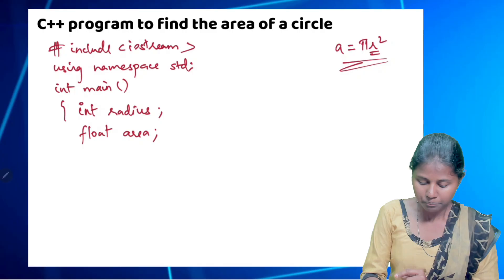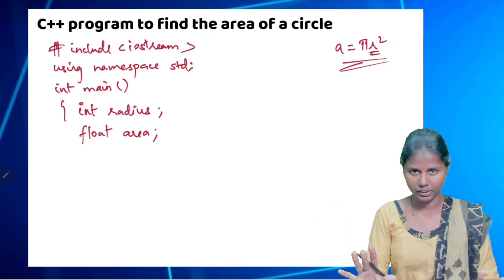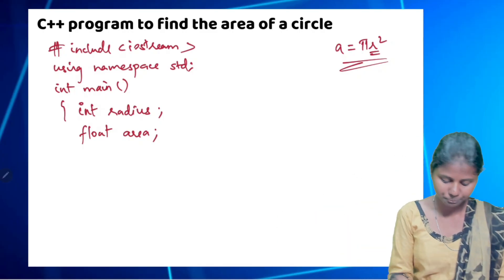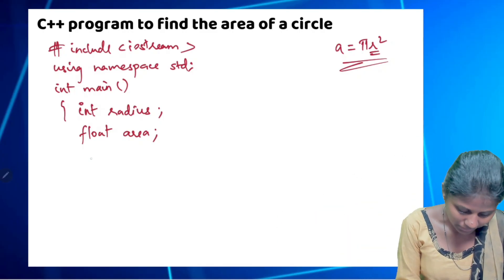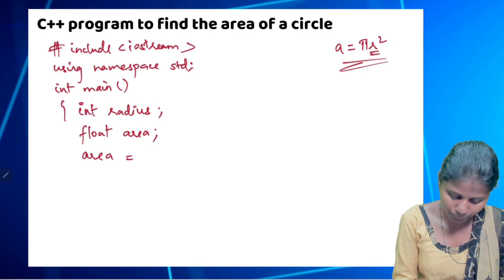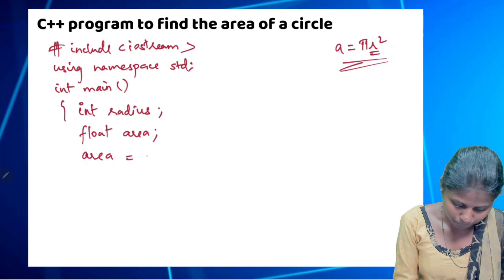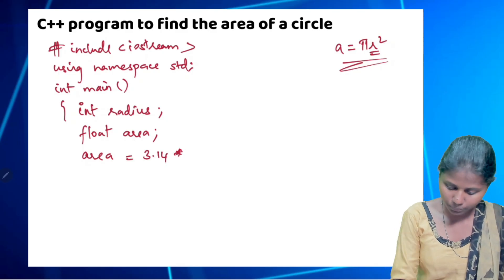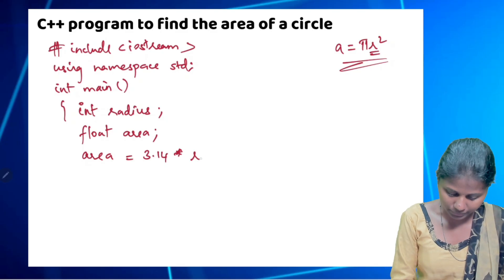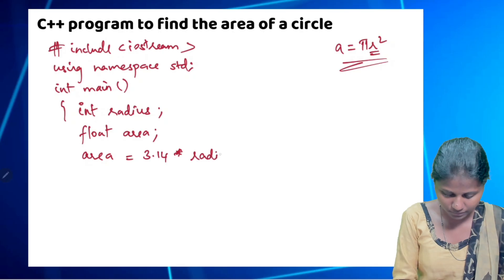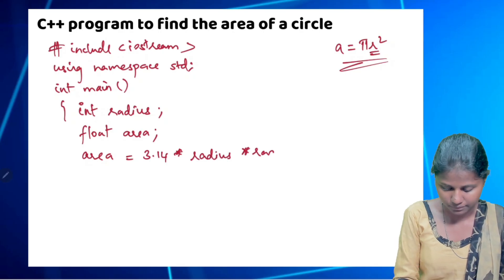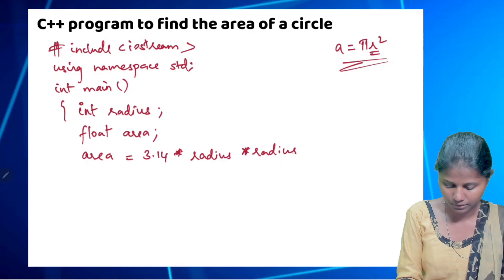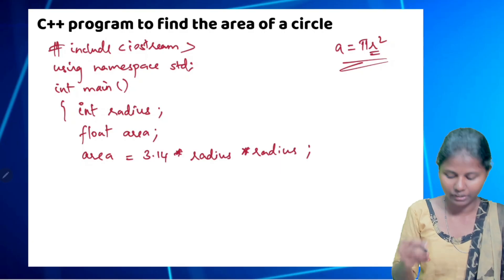Now, what do we do? Pi into r squared. The area is defined as: area is equal to pi value 3.14 multiplied by radius, into radius. That is the defined formula.